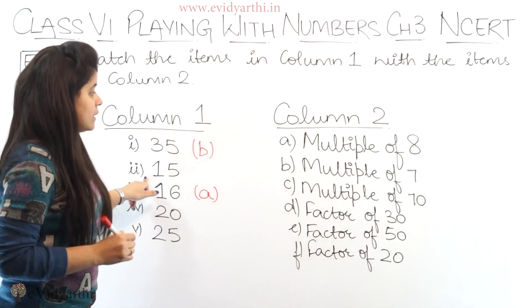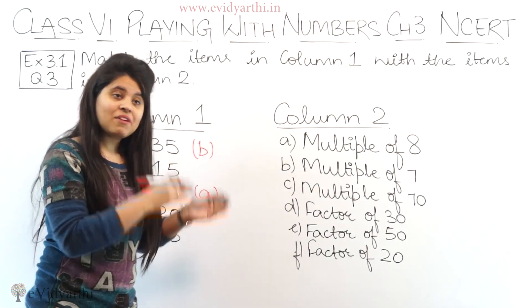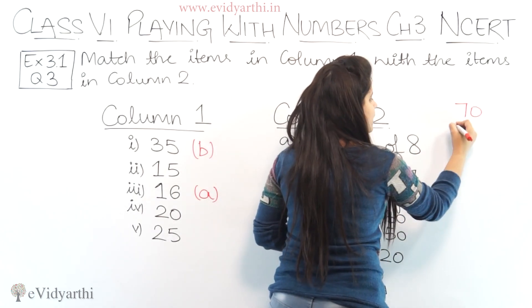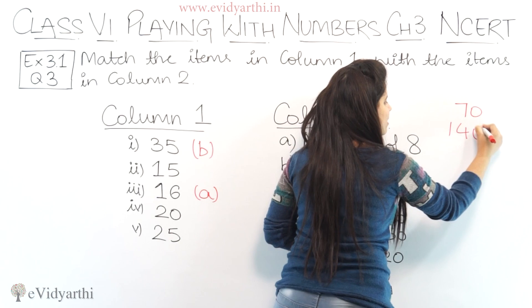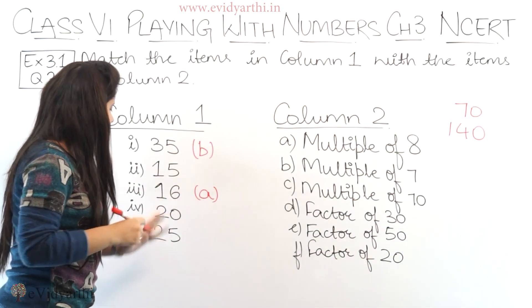Next, we have multiple of 70. Multiple of 70 means what comes in the 70 times table. 70 times 1 is 70, and 70 times 2 will be 140. So this means 140.